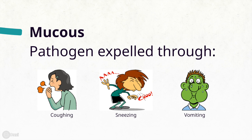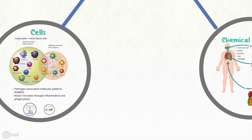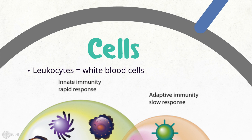Mucus is found in the respiratory, gastrointestinal, and urogenital tracts of humans and lines the inner tissue cells. Mucus protects the cells from infection by creating a barrier that traps pathogens before they come into contact with healthy tissue. These trapped pathogens are then expelled from the body by actions such as coughing, sneezing, and vomiting.